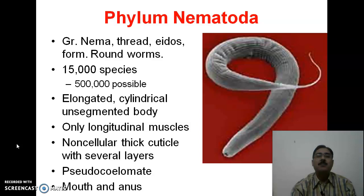Till date, approximately 15,000 known species are there. But since the nematodes occupy nearly every nook and corner of the environment, their species may be more than this — it may be up to 500,000. Their body is worm-like, elongated, cylindrical, and unsegmented.